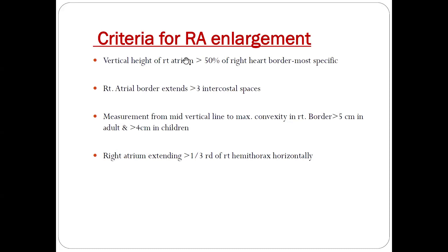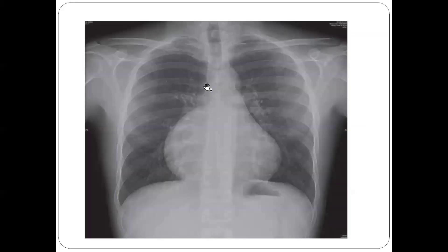So these are the four criteria to determine on X-ray whether right atrial enlargement is present or not. The most specific is the vertical height of the right atrium covering more than 50% of the right heart border. Hope you liked this video — if you have any queries, do comment below. Thank you.